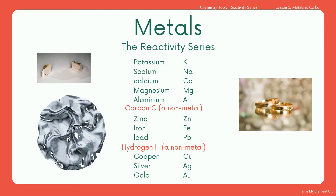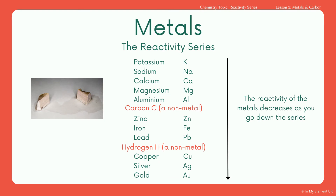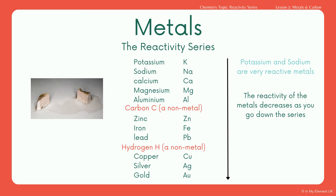The reactivity series also includes two non-metals: carbon and hydrogen. We're going to talk about the position of carbon in a little bit. As you go down the reactivity series the reactivity decreases, so for example potassium is more reactive than magnesium, but magnesium is more reactive than aluminium, and zinc is more reactive than copper. Potassium and sodium are very reactive, whereas silver and gold are not - they are unreactive, so you can often find them in their natural form.